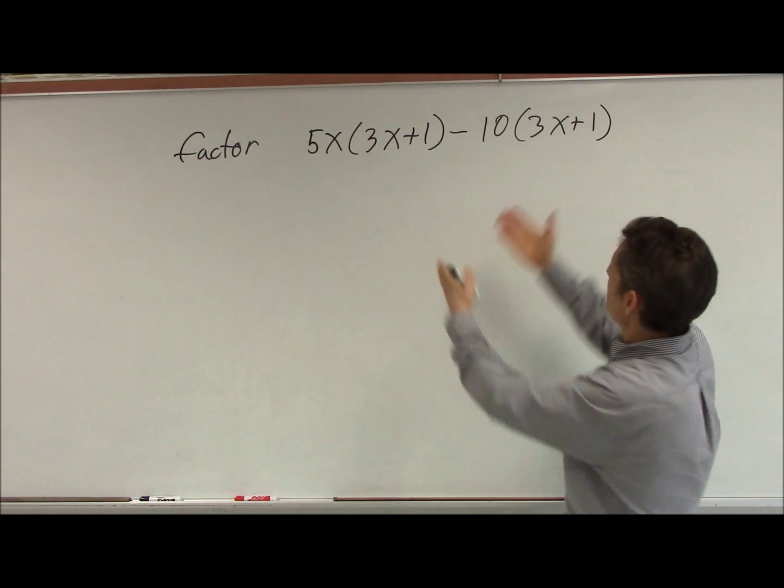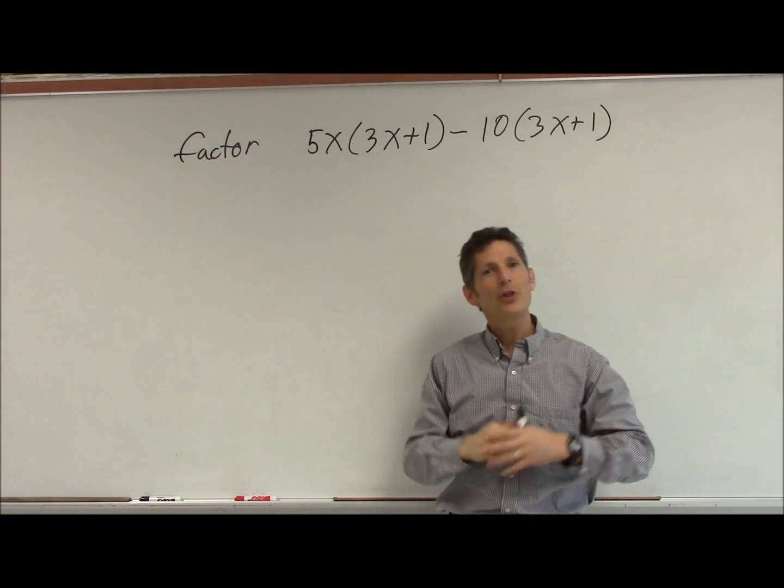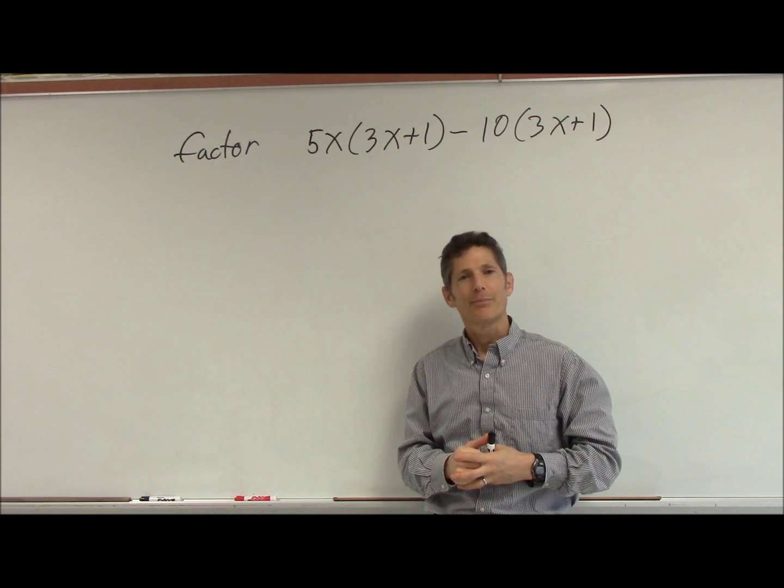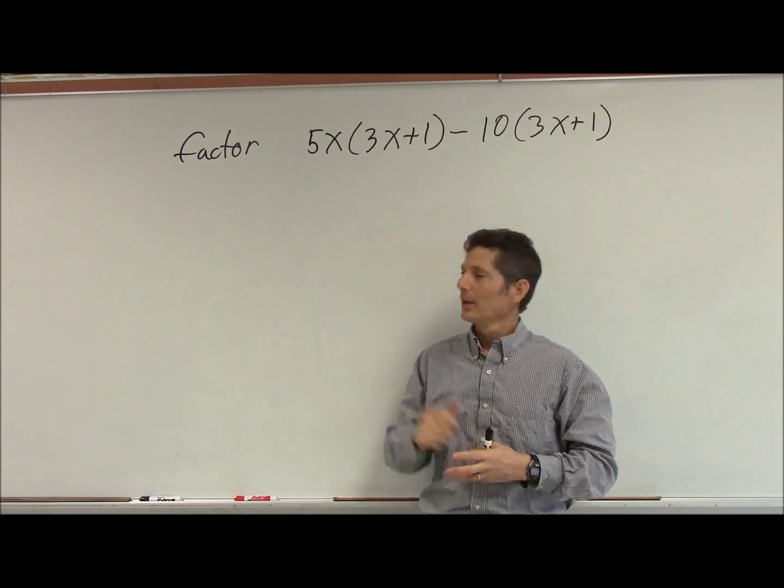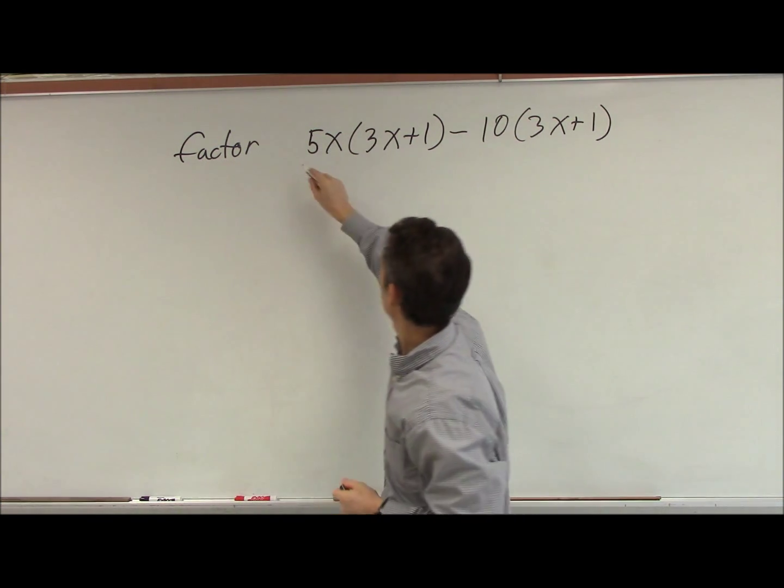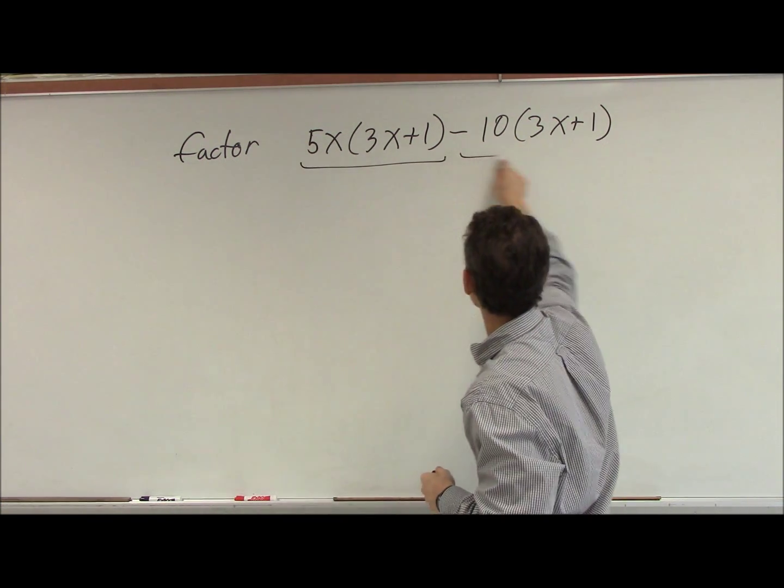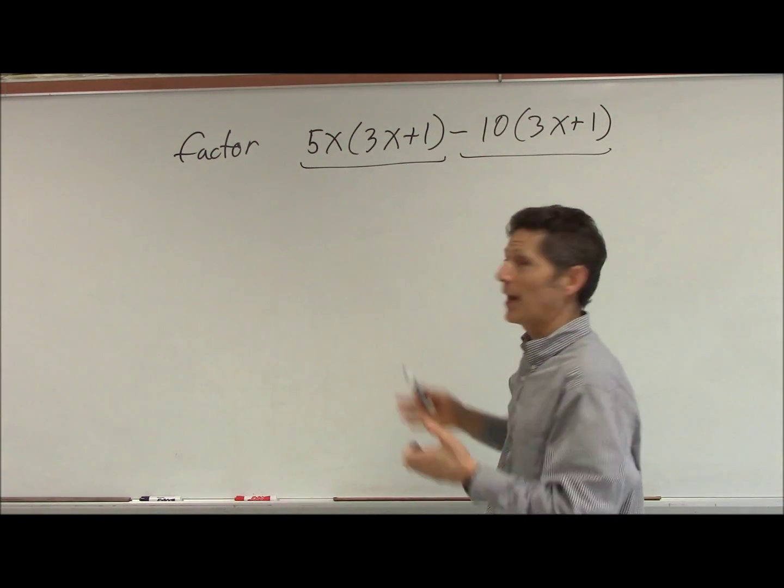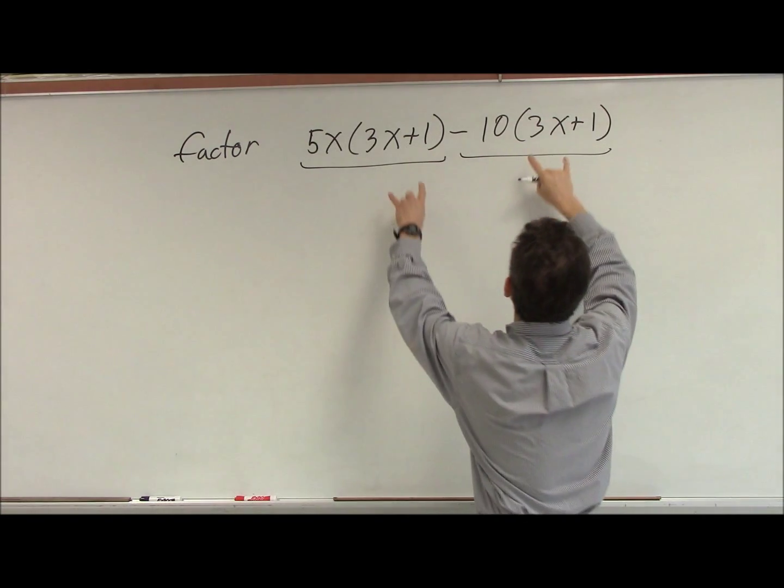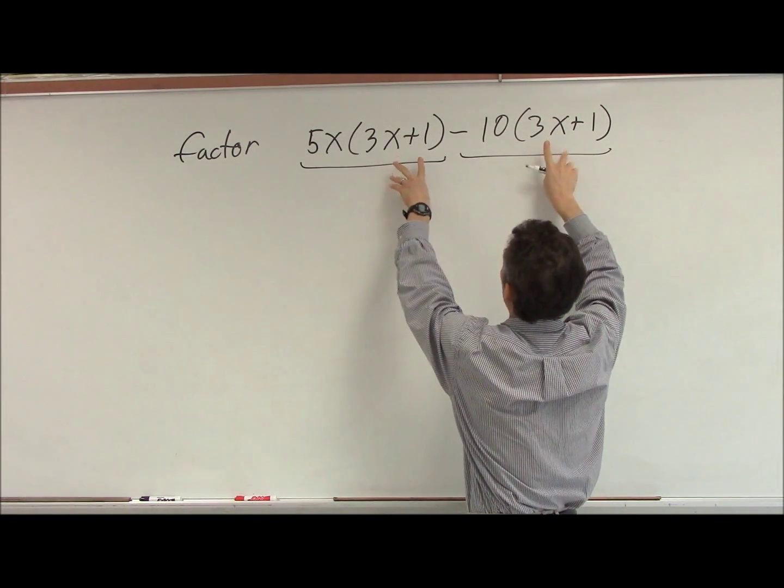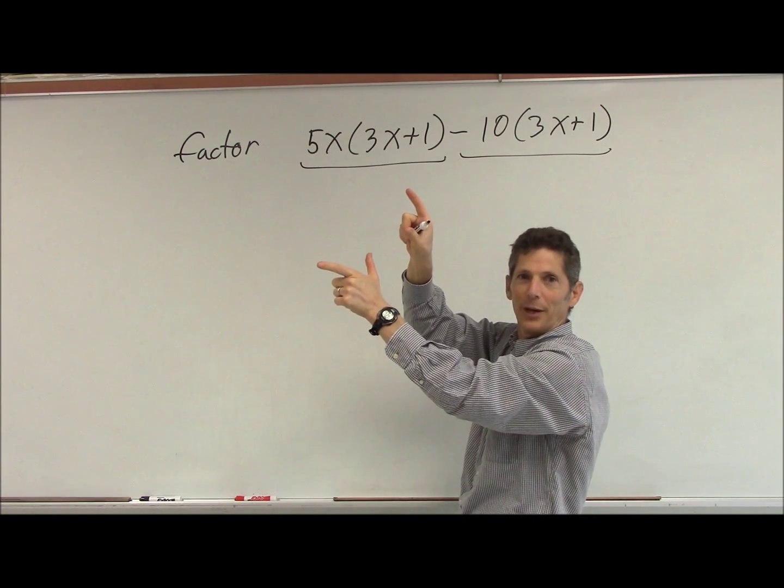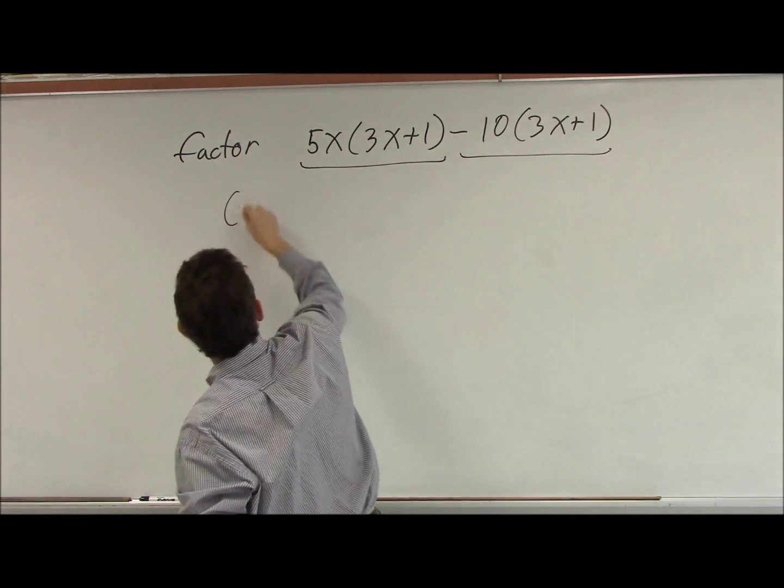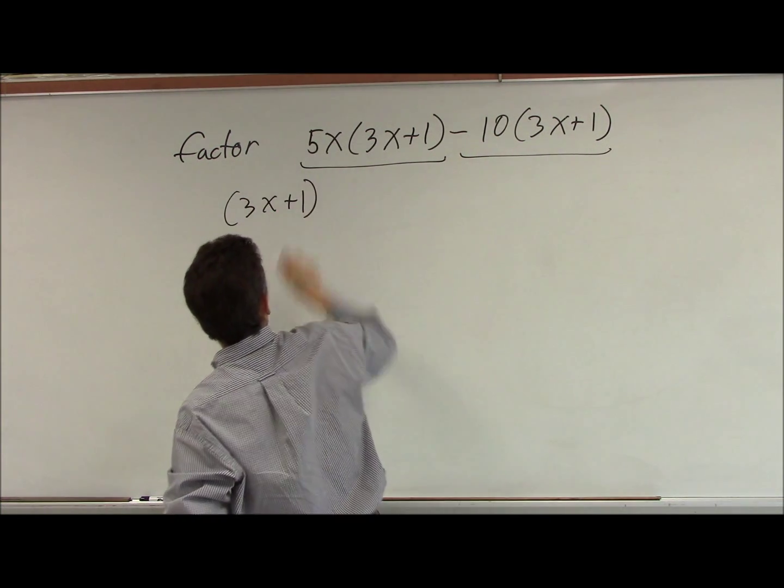So it just says factor. I guess I could have written factor and simplify. I'm looking at this big long thing here. How many terms do I have? I always think about how many terms I have. I see two terms. I have this first term and I have this second term minus this whole other guy here. And factoring, I'm just looking to see what they have in common. They both have this 3x plus 1 in common. I'm going to factor this out. That's a GCF, basically, the greatest common factor.